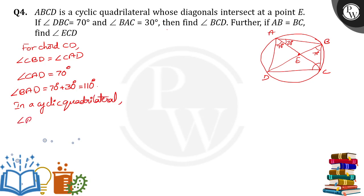In a cyclic quadrilateral, the sum of opposite angles is equal to 180 degrees. So, angle BAD plus angle BCD is equal to 180 degrees. BAD is 110. So, 110 plus angle BCD is equal to 180. Therefore, angle BCD is equal to 180 minus 110. We will get angle BCD is equal to 70 degrees.